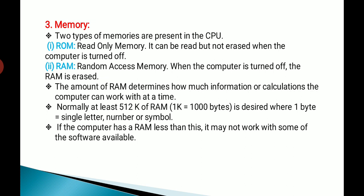The next one is memory. Two types of memories are present in the CPU, that is the Central Processing Unit. The first one is ROM and the second one is RAM. ROM is Read Only Memory.